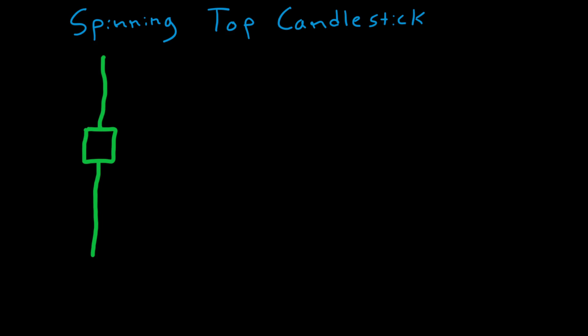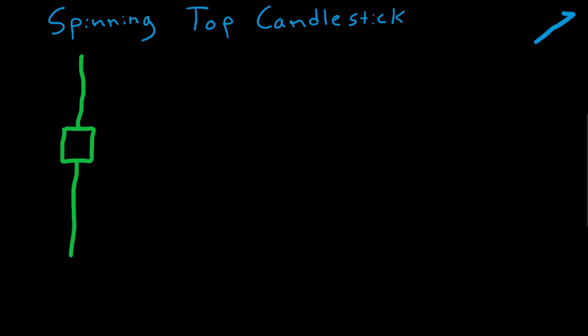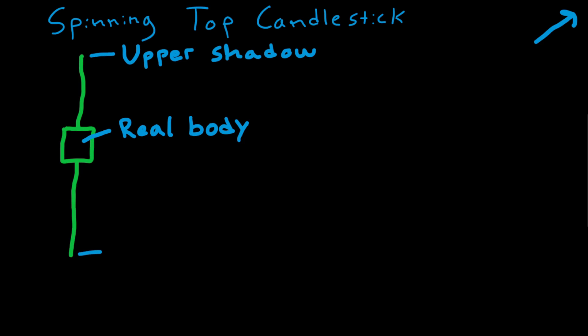As I mentioned in a previous video — which I will link up in the corner — this large rectangle in the middle is what we call the real body. Here we have the upper shadow and here we have the lower shadow.